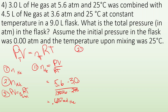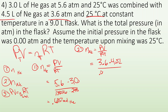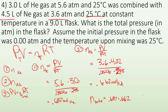Now I do the same thing for neon: moles = PV/RT. Pressure is 3.6 atm, volume is 4.5 liters, divided by 0.08206 × 298 K. I get 0.662 moles of neon. Total moles is 0.687 + 0.662 = 1.349 moles of gas.